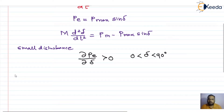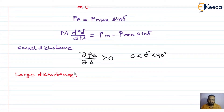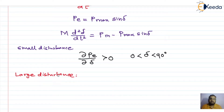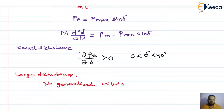Similar to small disturbances, we may have large disturbances in the system. If the system is subject to large disturbances, then the system is said to be stable if it has transient stability. However, unlike small disturbances, in the case of large disturbances or transient stability we don't have any generalized criteria to decide whether the system is stable or not.